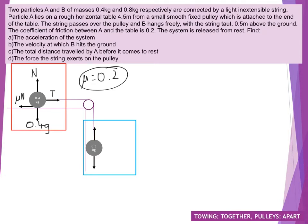Looking at the blue particle, or particle B, we've again got tension in the rope and then we've got weight as the force going downwards. So significantly simpler on the blue particle. We know that it's going to be the blue particle accelerating down, and therefore that's going to pull the red particle A across. So that's our directions of acceleration.